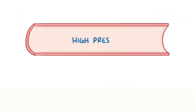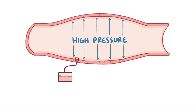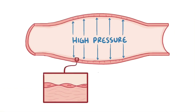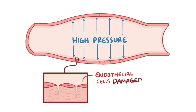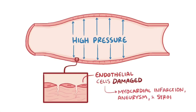High blood pressure is a serious problem for blood vessels because it causes wear and tear on the endothelial cells that line the inside of the blood vessels. Just like a garden hose that's always under higher pressure, in the long term blood vessels can develop tiny cracks and tears, leading to serious problems like myocardial infarctions, aneurysms, and strokes.